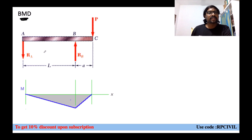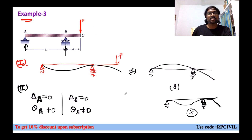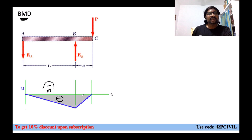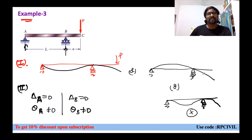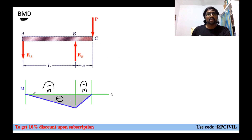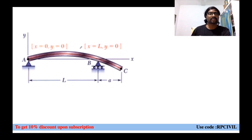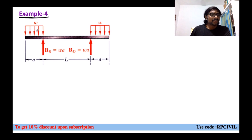From the bending moment diagram: on portion AB this is a hogging (negative) bending moment diagram. Whenever it is a negative bending moment diagram, convexity is upward. The first option shows convexity downward for AB which is wrong; the second shows convexity upward which is correct. For BC also, the negative bending moment diagram means convexity upward, and the second diagram satisfies this. So the second diagram is correct throughout - because the bending moment diagram is hogging throughout, convexity will be upward throughout the length.